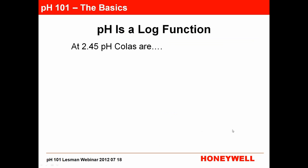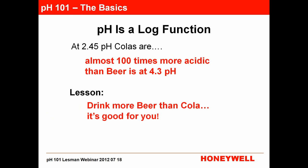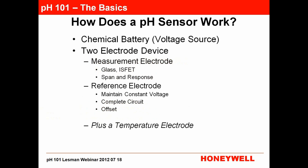The pH of Coke or Pepsi at 2.45 is almost 100 times more acidic than beer at 4.3 pH. So the lesson here is drink more beer — it's much better for you than Coke or Pepsi.